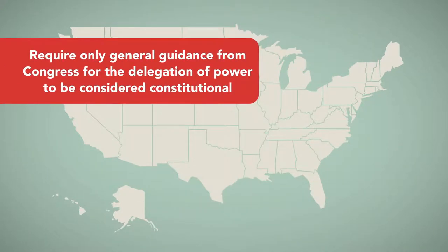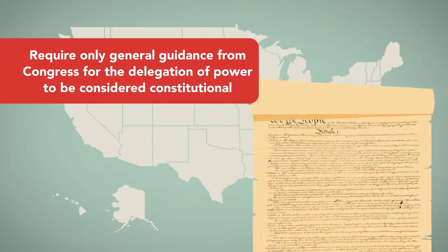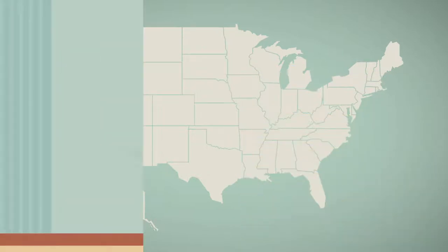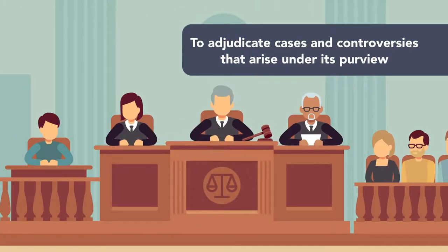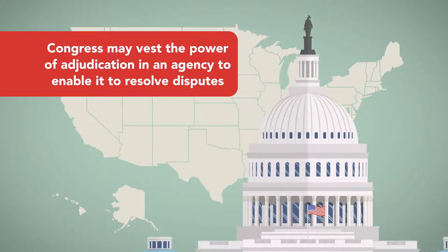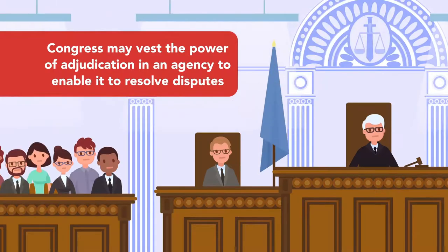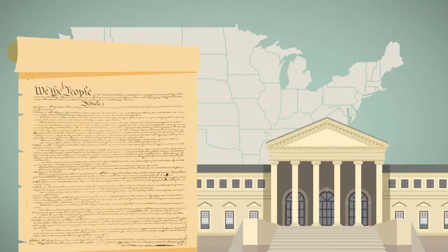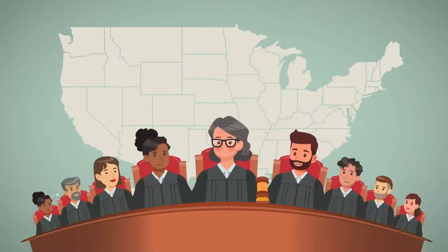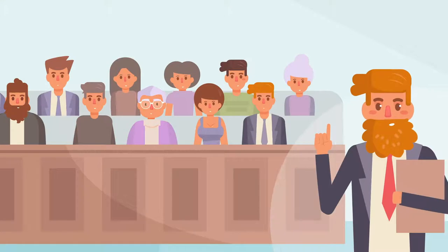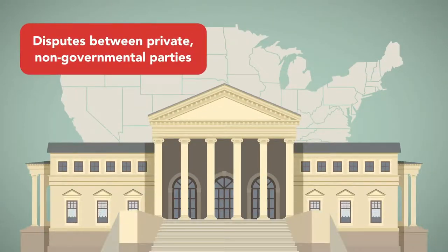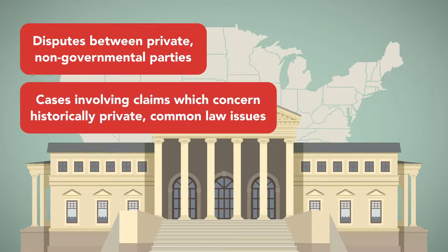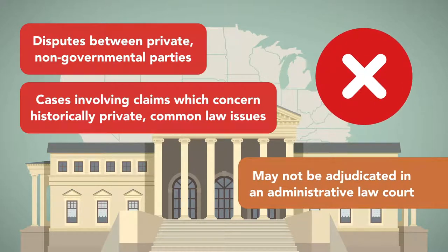This has been interpreted to require only general guidance from Congress for the delegation of power to be considered constitutional. Another primary function of the administrative agency is to adjudicate cases and controversies that arise under its purview. Congress may vest the power of adjudication in an agency to enable it to resolve disputes through case-by-case judicial processes, employing administrative law courts. However, the range of cases that administrative courts may adjudicate is limited. The Constitution vests the judicial power in the federal courts, which have special protections, such as life tenure for federal judges and the requirement of a jury trial for certain types of cases. As such, the courts have held that disputes between private, non-governmental parties, or cases involving claims which concern historically private common law issues which normally would be heard in the federal court system, may not be adjudicated in an administrative law court.